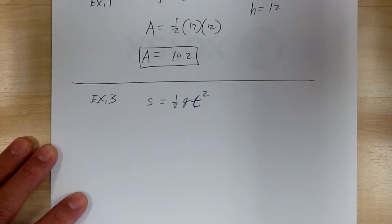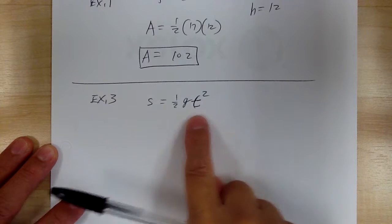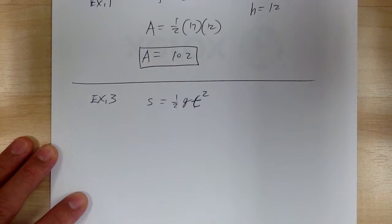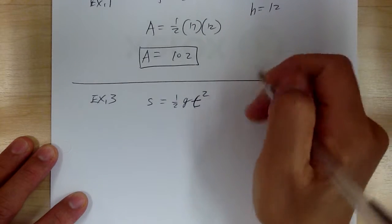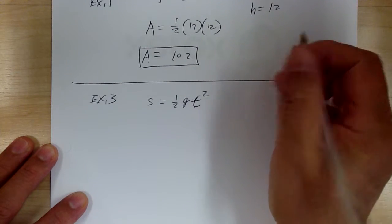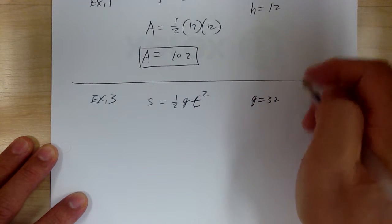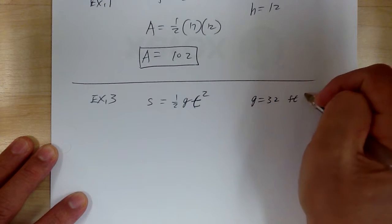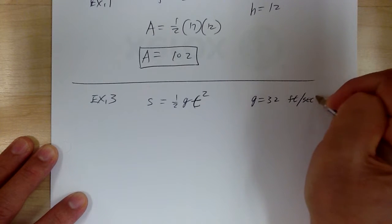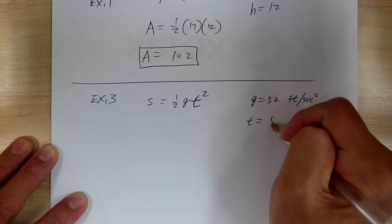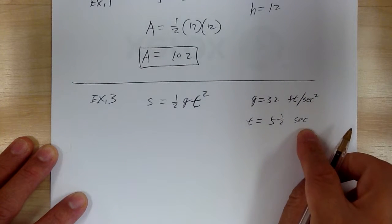So for example, if you're on the top of the building, and you drop an object, and the object is going to fall, right? So this is a formula that tells you how far the object will fall, like if you drop a ball from the top of the building. And so this one over here is find S when G equal to 32. By the way, the label for this would be feet per second squared. Here, that's the label. So you have to be aware of that. T equal to 5 and a half seconds. So again, that's the label.